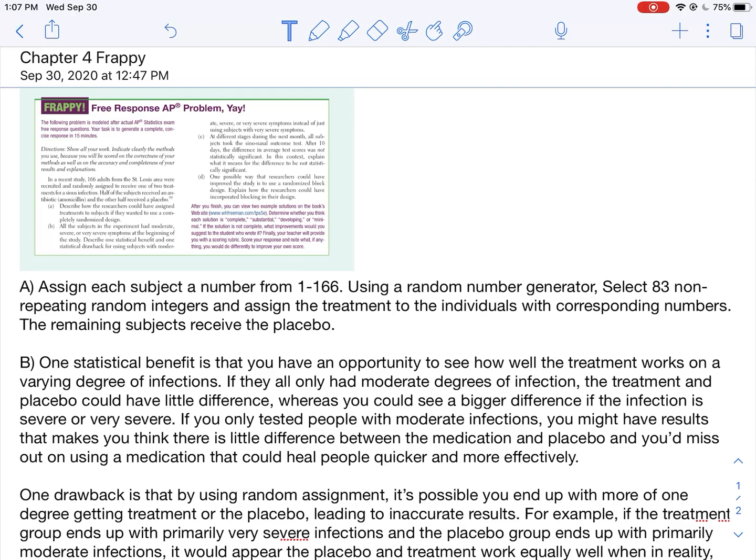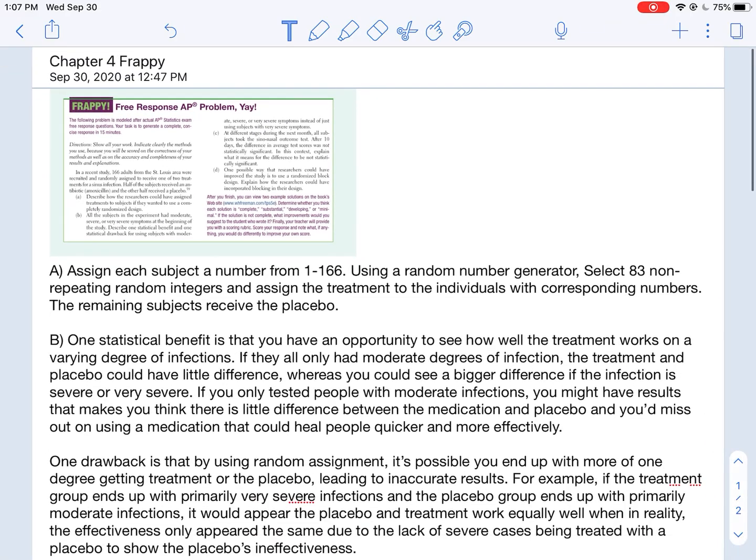Notice how I include that detail. It's something I missed the first time. Always include that, how are you randomly doing it. That's an important detail and I did here, so we're using a random number generator. I would select 83 non-repeating random integers and I would assign the treatment to the individuals with the corresponding numbers. The remaining subjects would receive the placebo. So what I did by doing that is randomly I selected the individuals who get the treatment, and then the others were obviously randomly selected too because if I randomly selected some to get treatment, the rest are going to get the placebo. So I explained my process, I explained how I was going to randomly generate these numbers and how I would go about doing it.